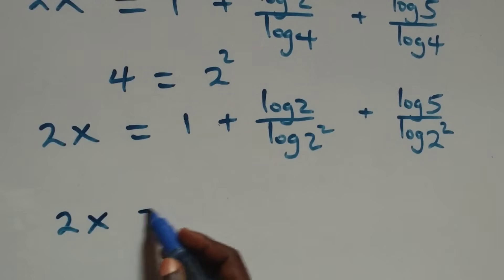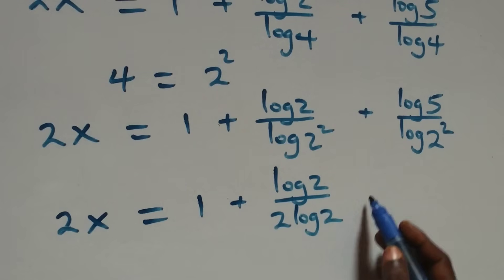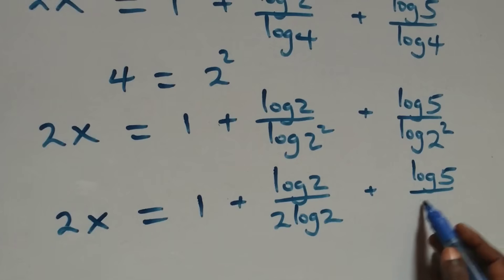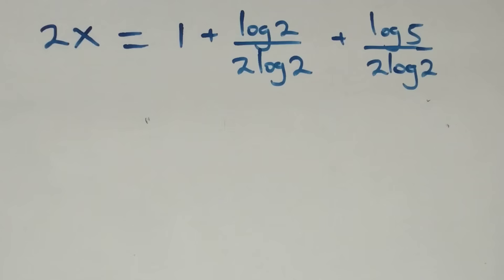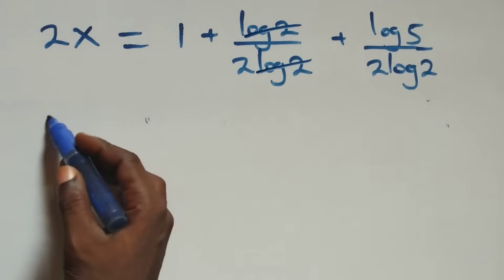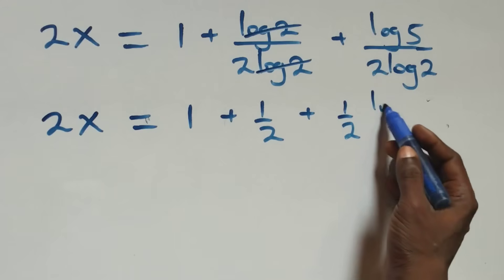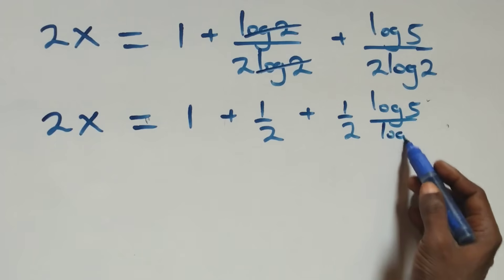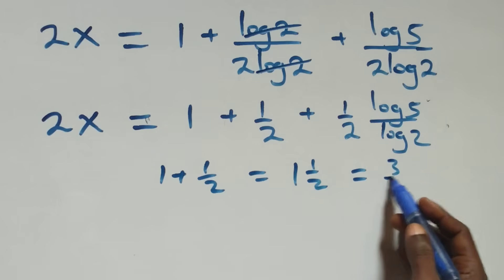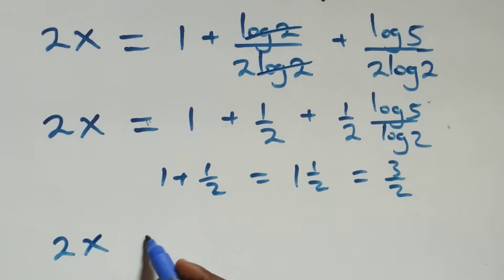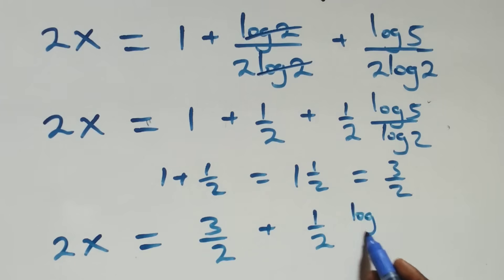Applying the power rule to log 2 squared, the 2 comes down. All we have becomes 2x equals to 1 plus log 2 over 2 log 2 plus log 5 over 2 log 2. Log 2 cancels in the first term giving 1/2, so we have 2x equals to 1 plus 1/2 plus log 5 over 2 log 2, which simplifies to 2x equals to 3 over 2 plus 1 over 2 times log 5 over log 2.